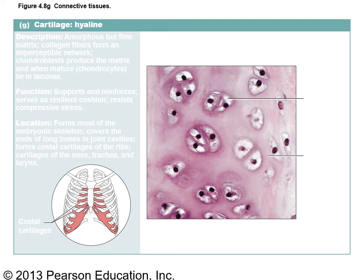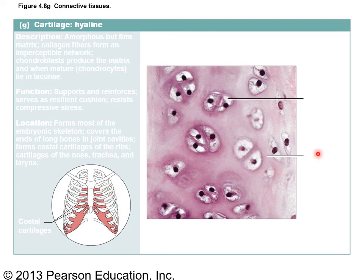Cartilage has very few cells and a tough non-living matrix, with cells housed in little openings called lacunae that look like small eyeballs sitting in the tissue. There are three types. Hyaline cartilage has no visible fibers — the word hyaline means ground glass because it looks very uniform. It's found in costal cartilages and at the ends of long bones; it's also what you'd call gristle when eating meat.